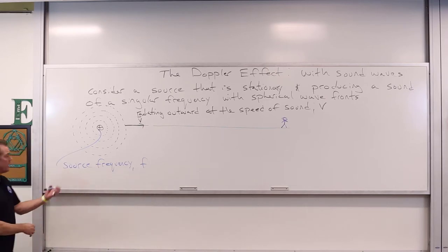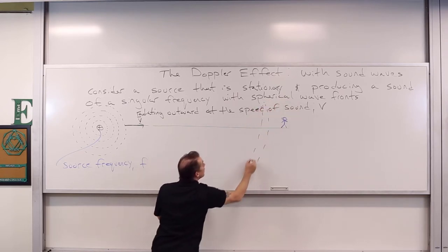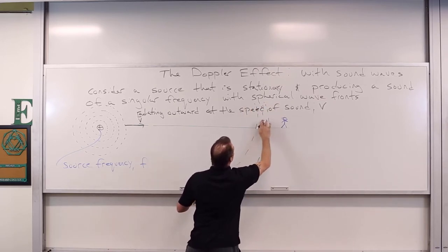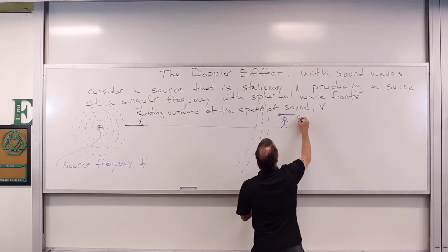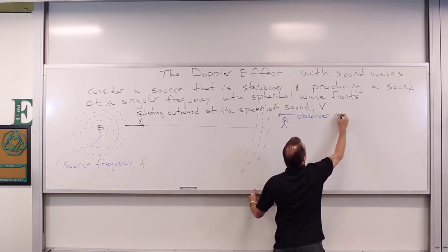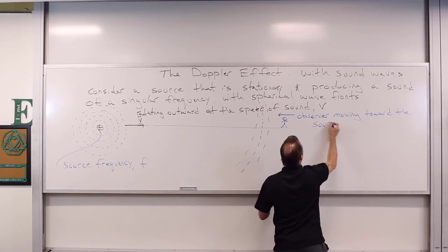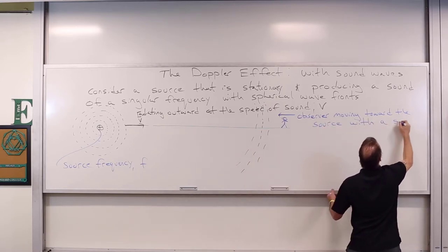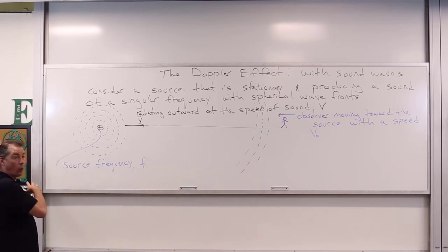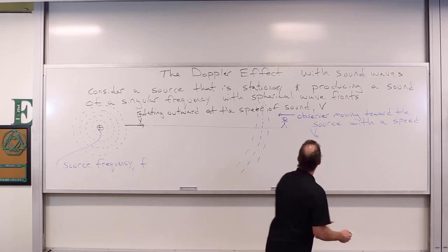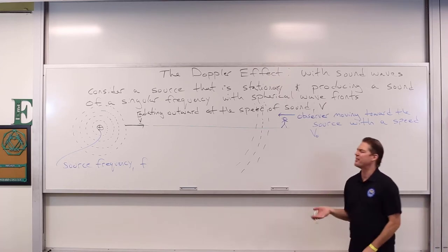Let's say the observer is moving toward the source with speed V sub O. These wavefronts continuously come in; they're traveling at the speed of sound — in air at 20 degrees Celsius, that's 343 meters per second. The spatial separation between these wavefronts is defined as the wavelength.